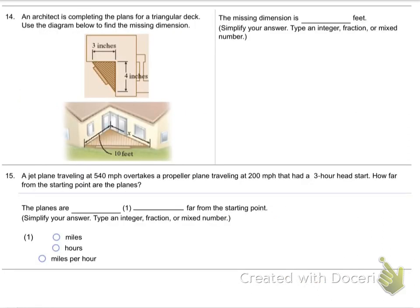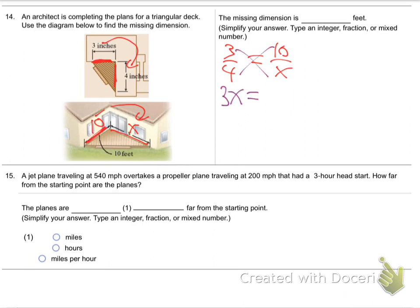Number 14. They're giving me an architect's plan: 3 by 4 is 10 by X. It's a ratio: 3 is to 4 as 10 is to X — two equal fractions. Cross multiply: 3X equals 4 times 10. 3X equals 40. Divide by 3. X equals 40 over 3.